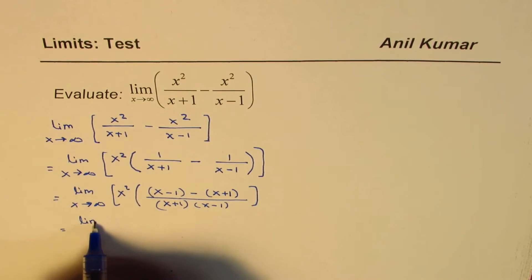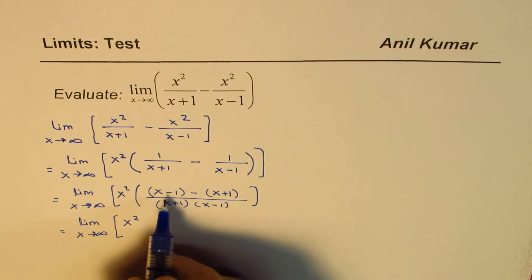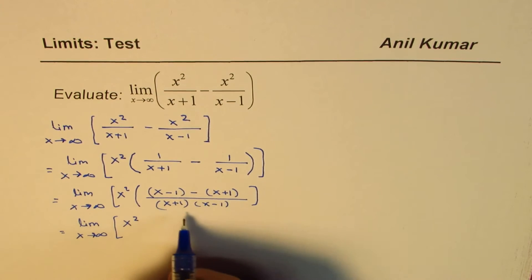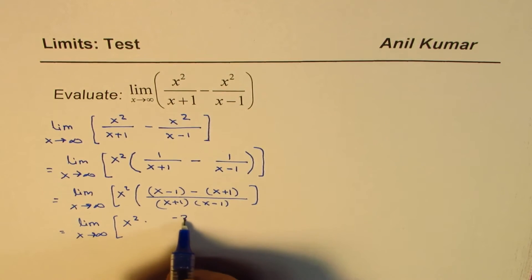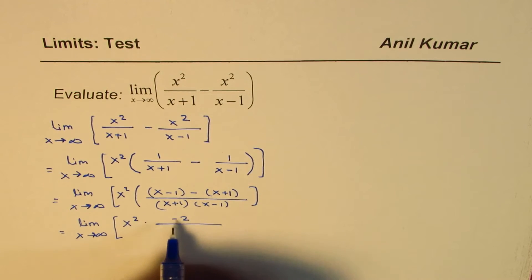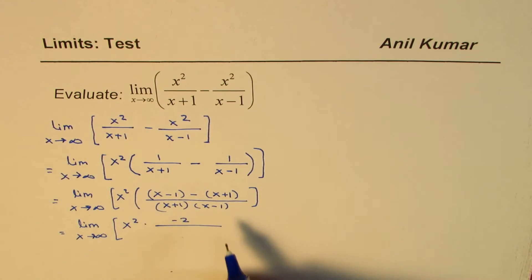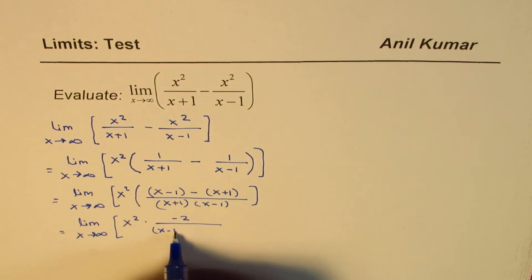Further, we could simplify the numerator, as you can clearly see. So we have x squared, x minus x is 0, minus 1 minus 1 is minus 2. So we get minus 2 over x plus 1 times x minus 1. Let's do it in steps.